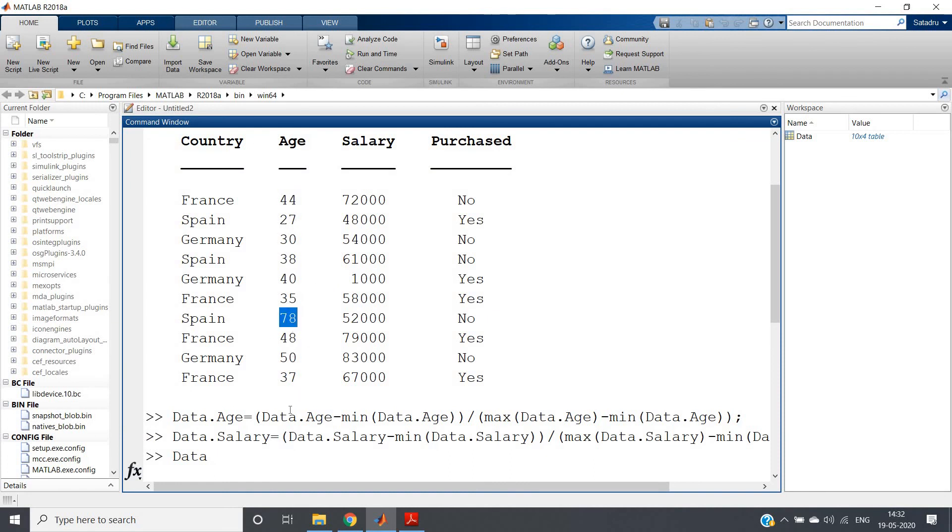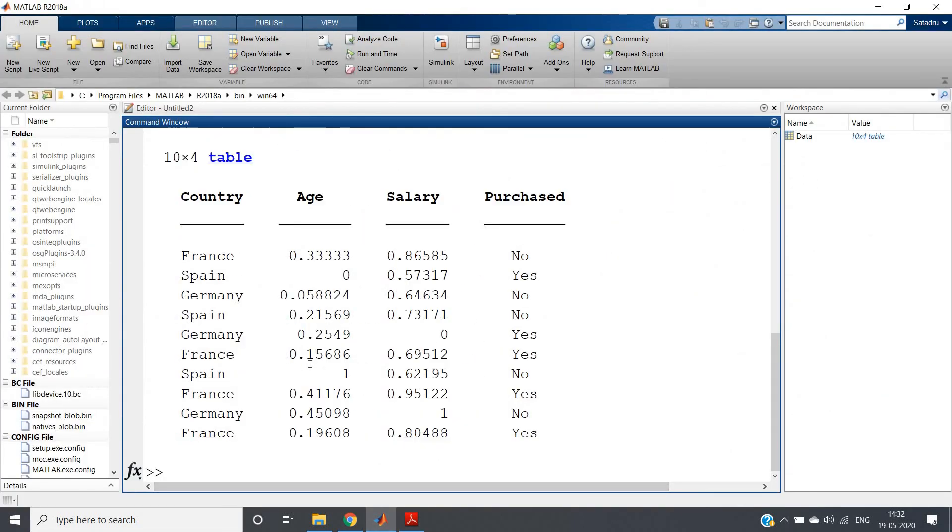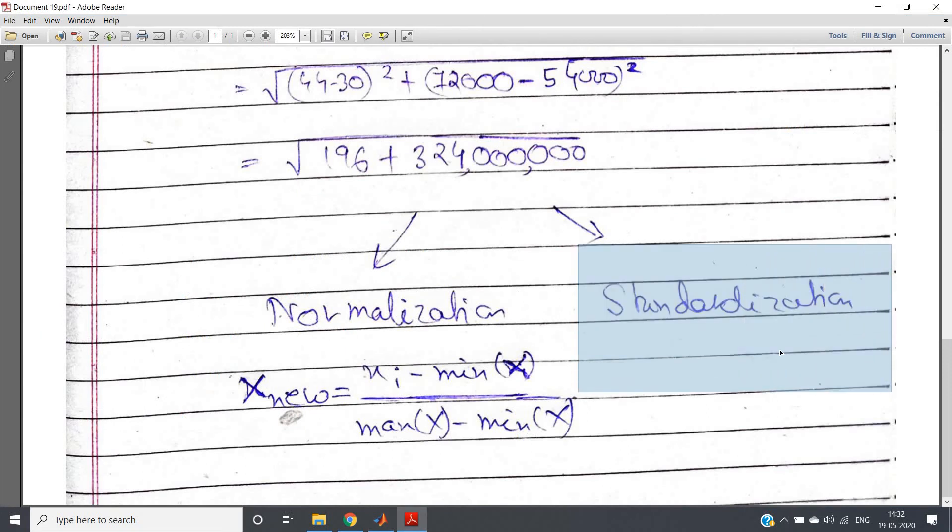So in Spain, from the fourth row from the bottom, this fourth row, why we are getting one? Because you can see 78 is the maximum age in the whole column. So as a result, when you are putting maximum minus minimum in numerator and denominator also maximum minus minimum, the whole numerator and denominator will cancel each other and result to one. This is called feature scaling method using normalization.